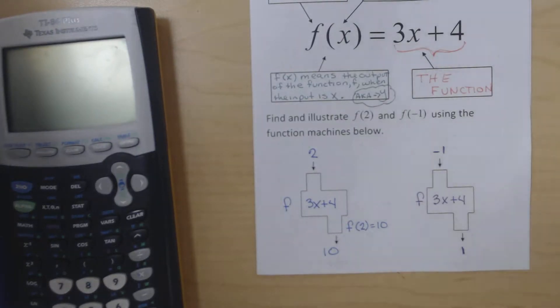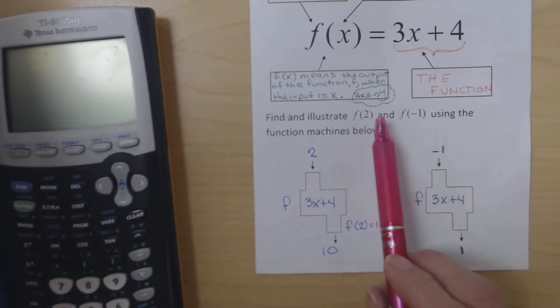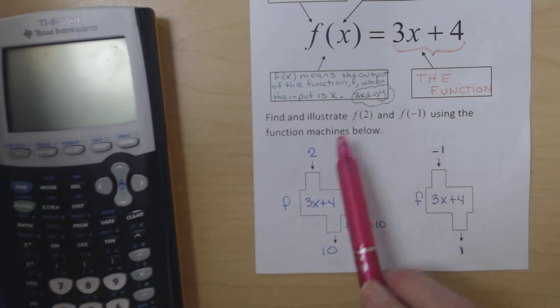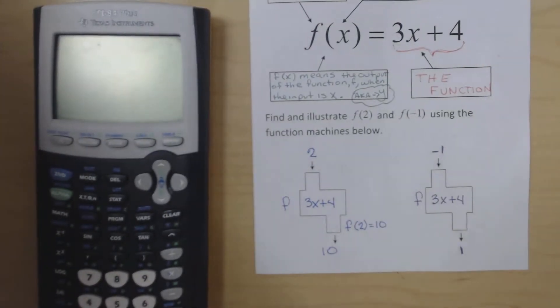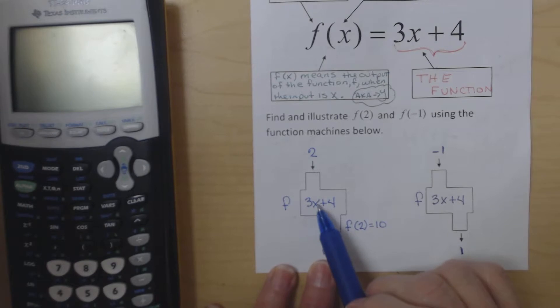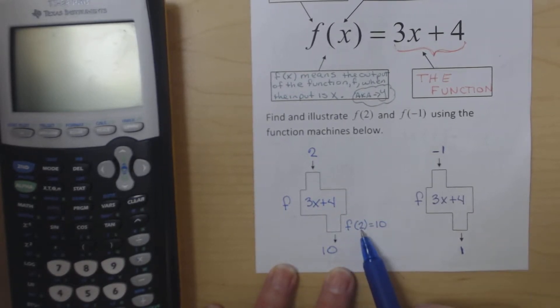On the front we have two examples of function machines. First we'll deal with f(2). f(2) says put 2 as my input. The function is 3x plus 4. When we evaluate 3x plus 4, replacing x with 2, we get 3 times 2 is 6 plus 4 is 10. So the function evaluated at 2 is equal to 10.